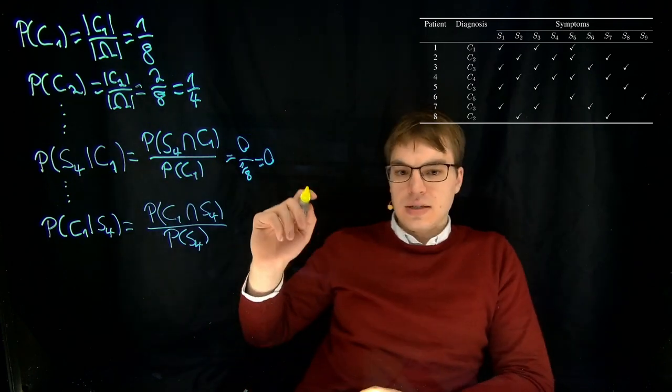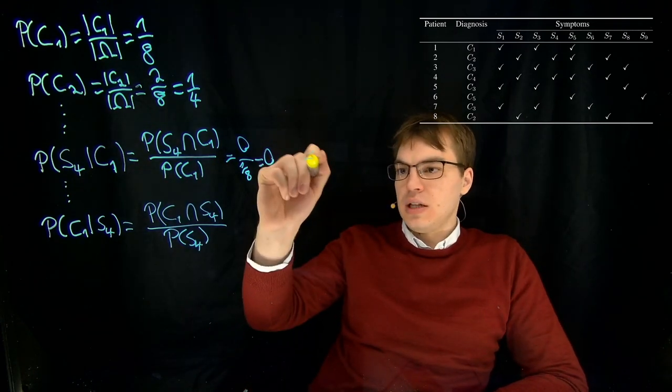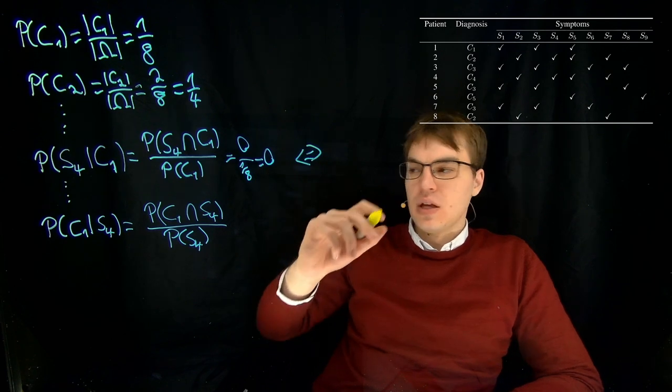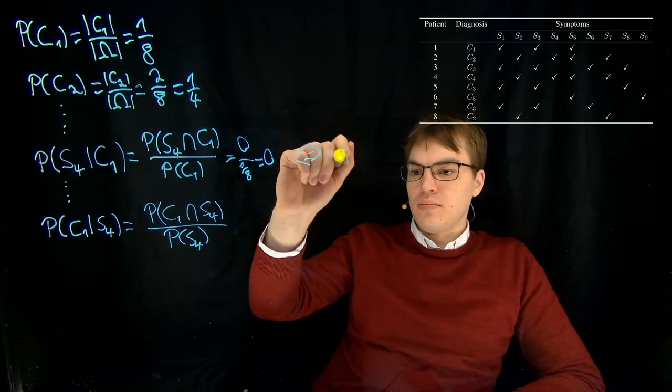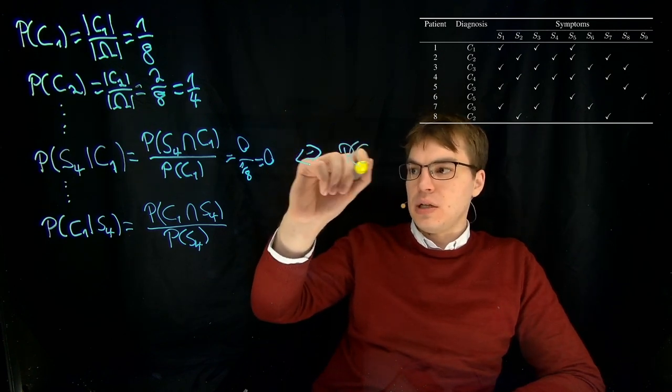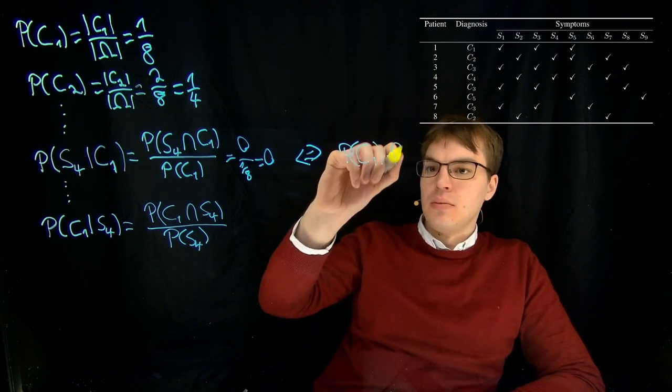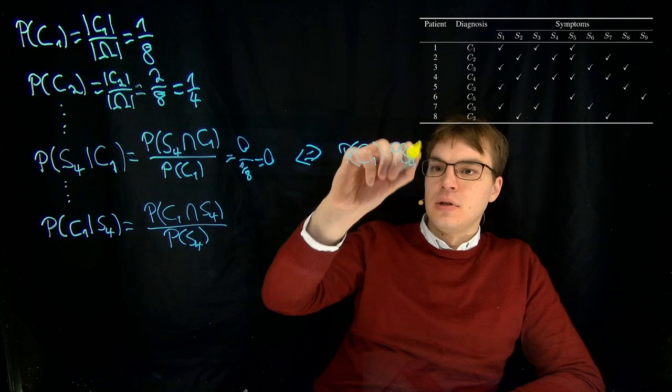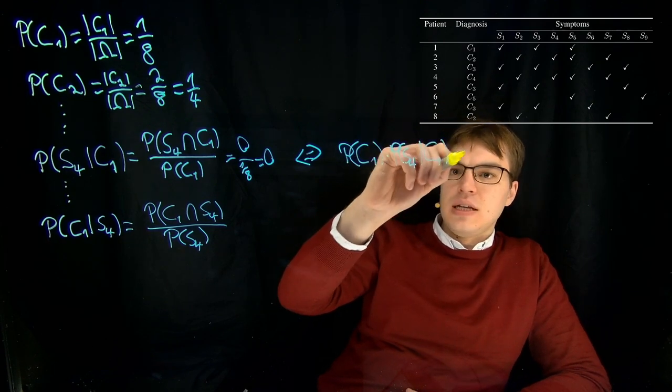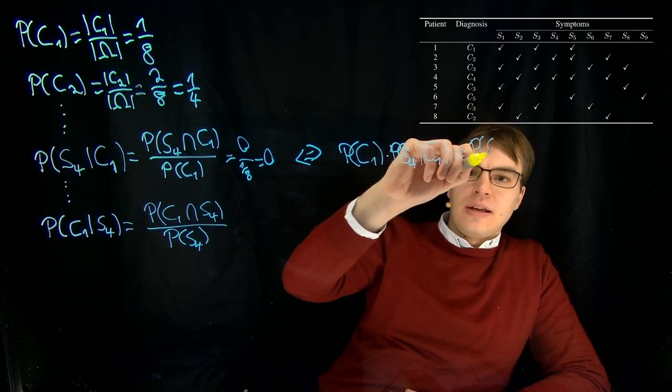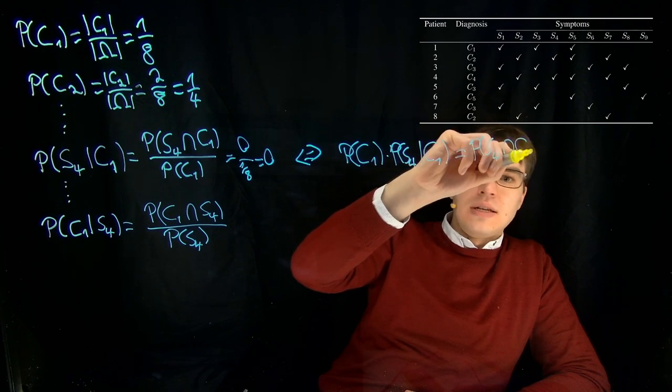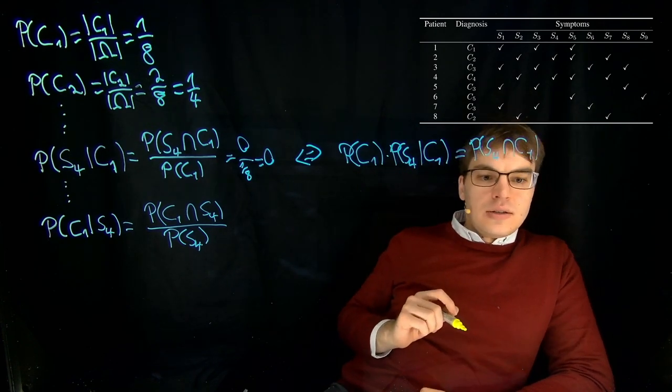So this yields, let's maybe write it that way, this yields probability of C1 times probability S4 under the condition of C1 equals probability of S4 and C1. So what we get here is probability of C1 times probability of S4 under the condition of C1.